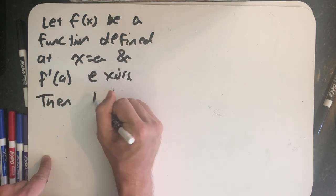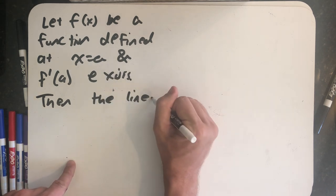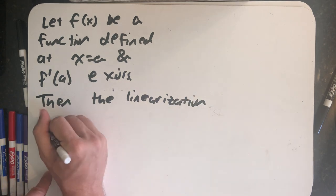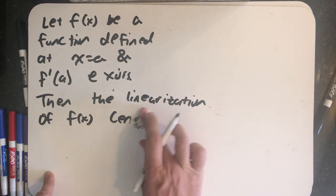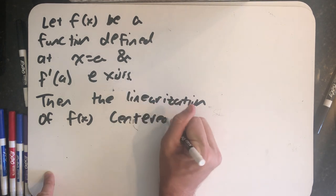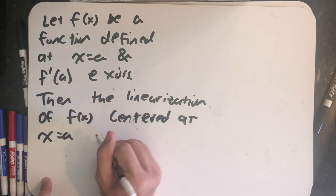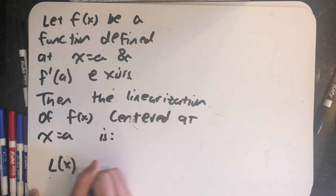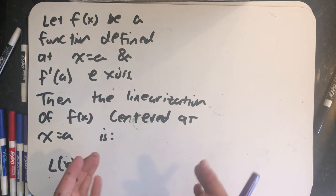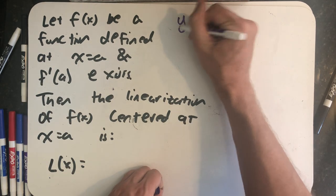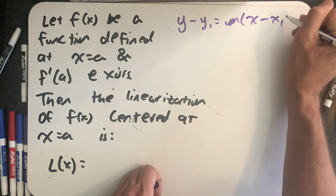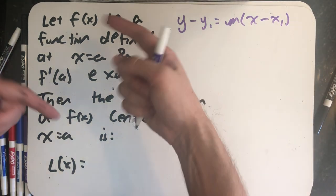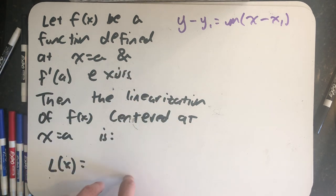Then the linearization function of f of x centered at a is... what I want to do is I want to fill in a formula here for L of x. I want to write it down in symbols. Now in practice I'm just going to find the equation of a tangent line, but I want to talk about that formula that's in the textbook. If I think about finding the equation of a tangent line, I generally use point slope, and if I just fill in all the spots with the idea of a tangent line, I'll know what to write down here for this formula.